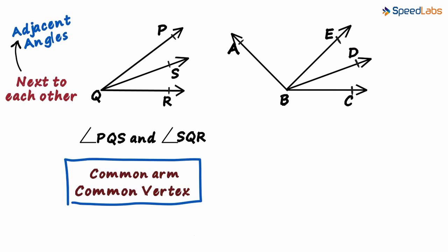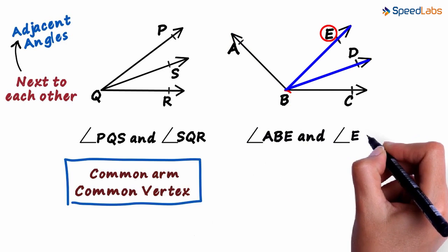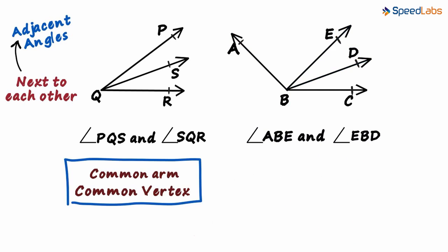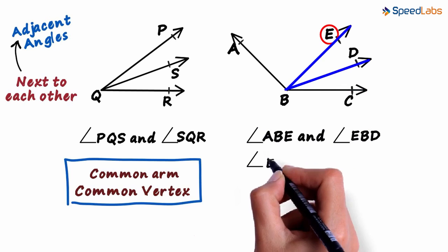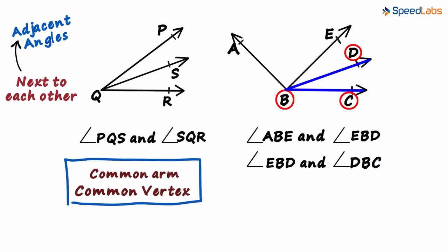Okay, here we go. The first pair of adjacent angles I would notice in the figure would be these two: angle ABE and angle EBD. You can see that they have a common arm, ray BE, and a common vertex B. The second pair I would have seen is this angle and this angle: angle EBD and angle DBC. Most of us would have got these two right.